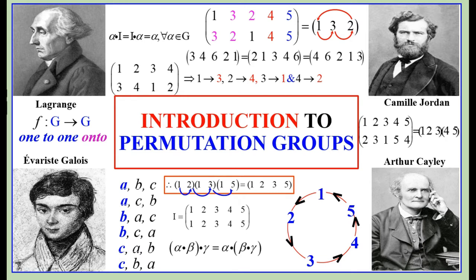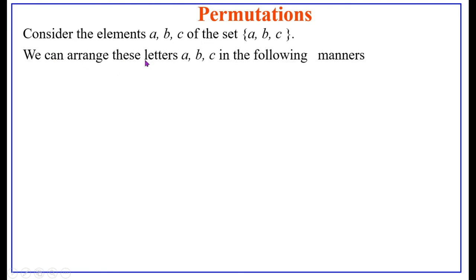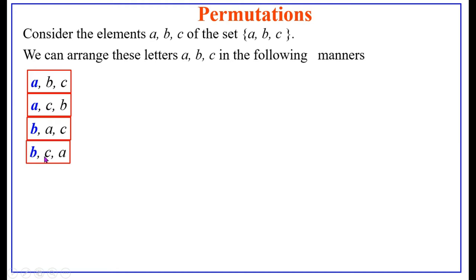When Cayley introduced the concept of an abstract group, it was not immediately clear whether or not this was a larger collection of objects than the known permutation groups, which had a definition different from the modern one. Cayley went on to prove that the two concepts were equivalent — this is Cayley's theorem. Now, let us define what a permutation is. Consider the elements a, b, c of the set {a, b, c}. We can arrange these elements in the following manners.